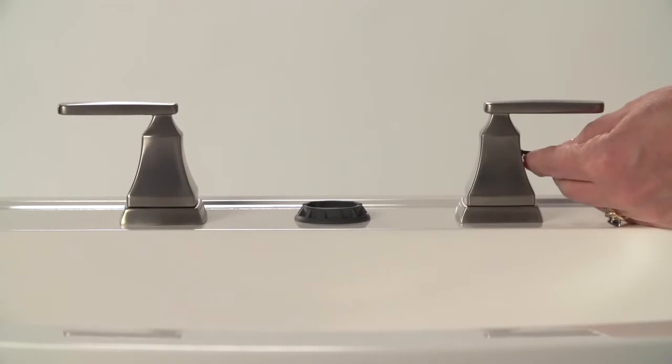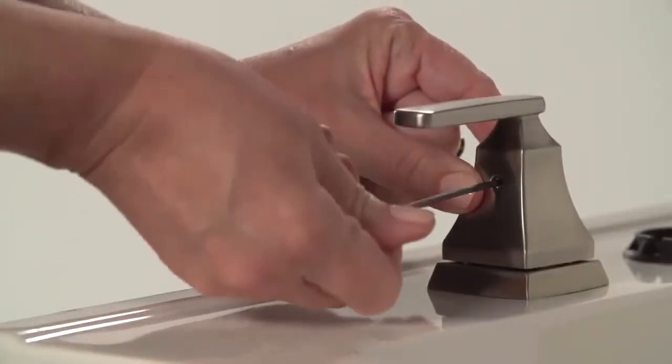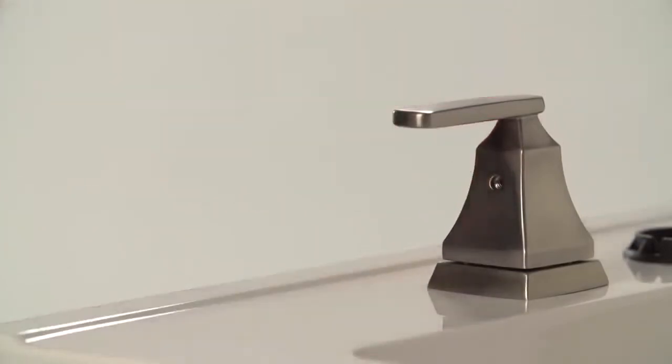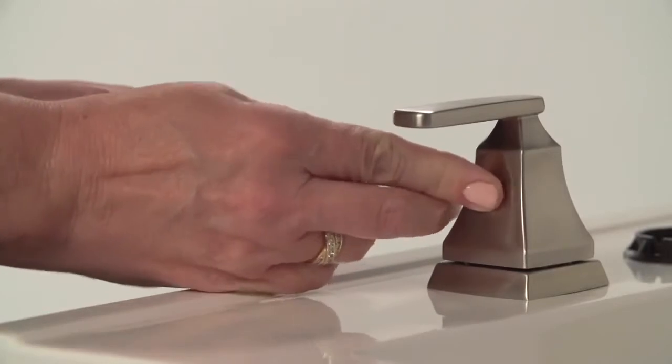Secure the handles using the hex screws and small allen wrench that are included in the handle kit box. Now you can select from two options of handle button covers. Simply push them into the side of the handle.